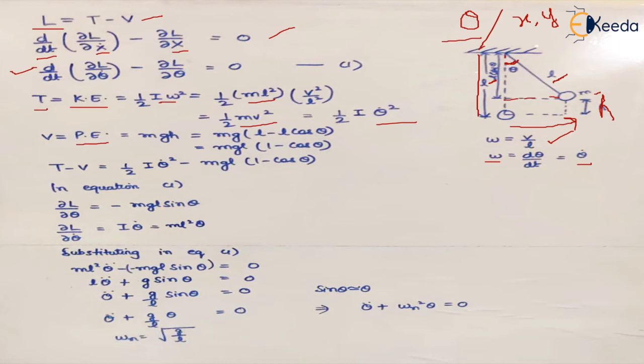Now the general equation for potential energy is mgh. What is h in this case? It is l minus l cos theta. So if we take l common this is the equation that we get. The Lagrangian L is given by T minus V. So we can place the value of T and V, and this is the equation that we get.